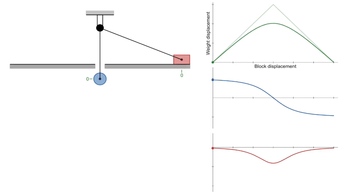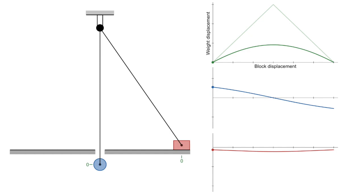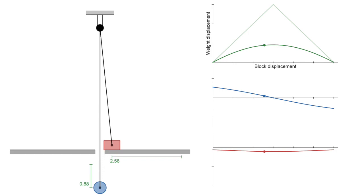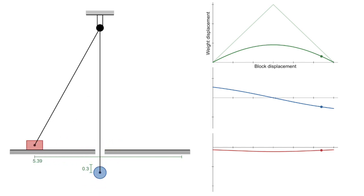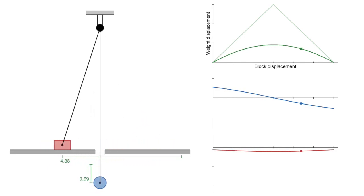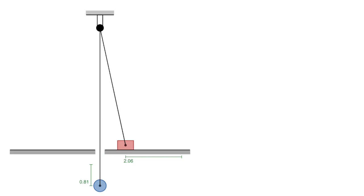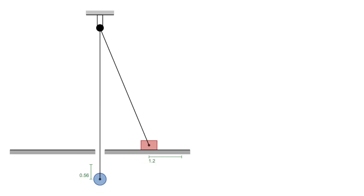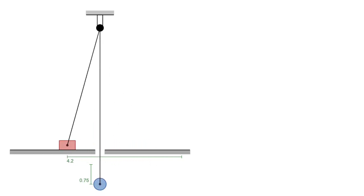It becomes even clearer with the larger pulley height. If this is the starting configuration, then when the weight is released, the block will move much farther than the weight in any range of time, so it must be experiencing a greater acceleration. Now, who wants to compute the actual acceleration as a function of time? Do I hear second-order nonlinear differential equation?